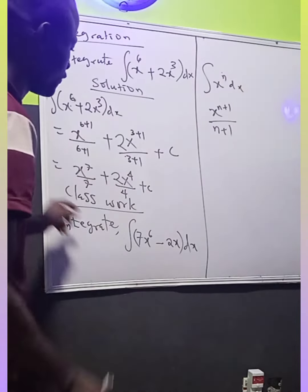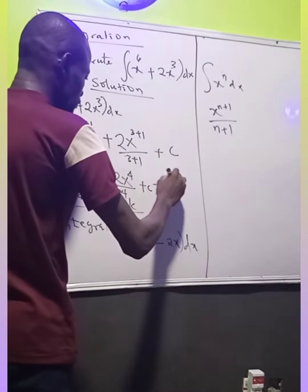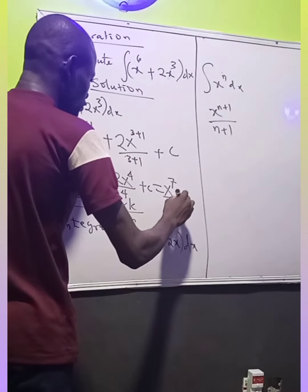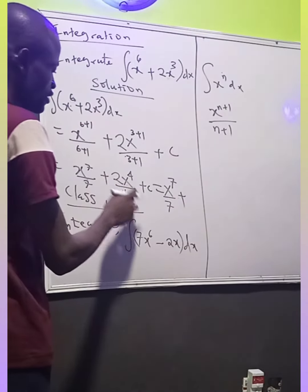So you can break this further to have x raised to power 7 divided by 7 plus 2. The 2 goes to itself as 1 and comes here as 2.